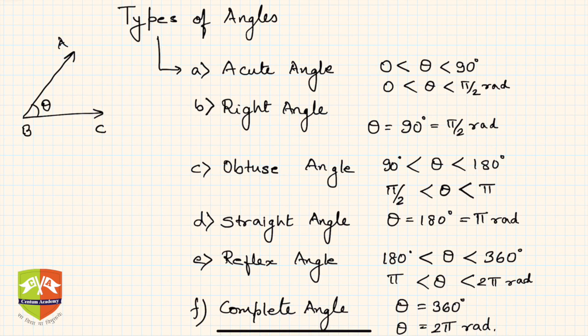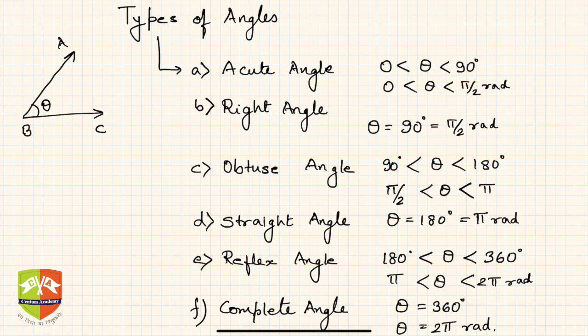Hello friends, welcome again to a session on lines and angles. In this session we are going to discuss an interesting topic — types of angles. If you observe the two adjacent edges of your notebook, they meet at a point and make an angle. Look at the ceiling where it meets a vertical wall — again you can see an angle being made. There are lots of angles around you which you observe on a daily basis, and today we are going to categorize those angles.